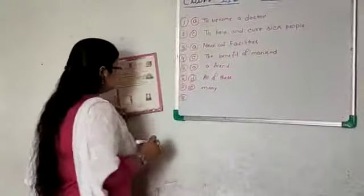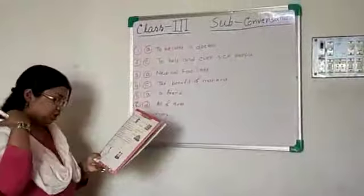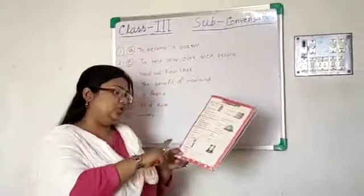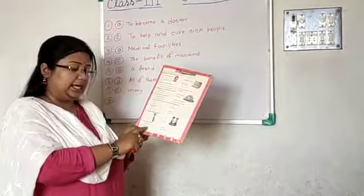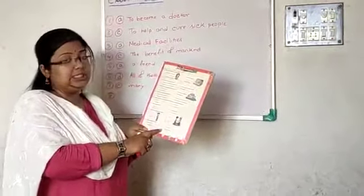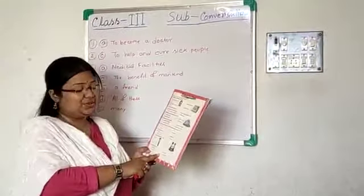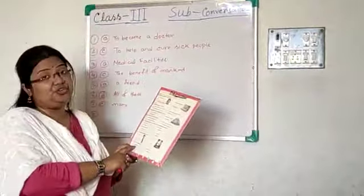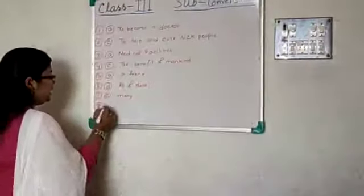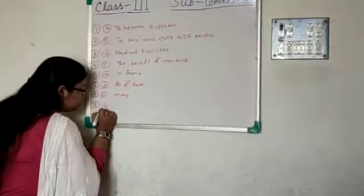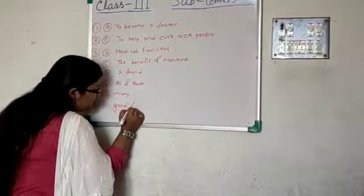Question number 8: you should always — A, make good friends; B, make bad friends; C, both A and B; D, none of these. You should always make good friends. So option A: good friends.